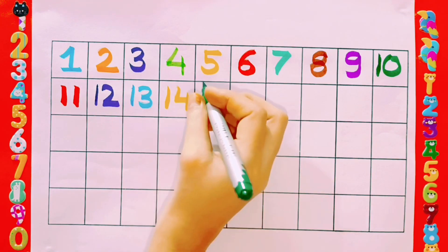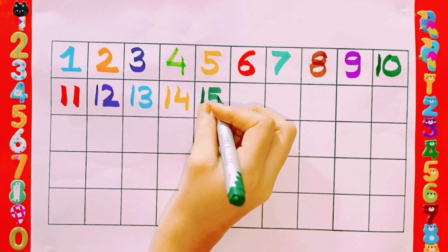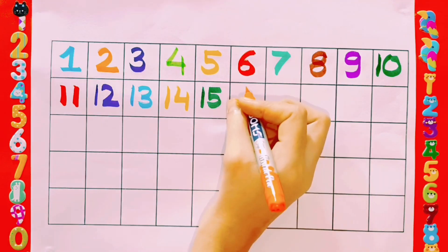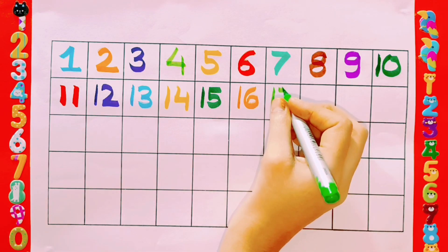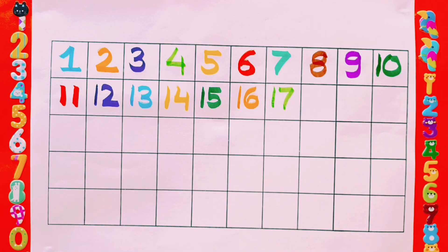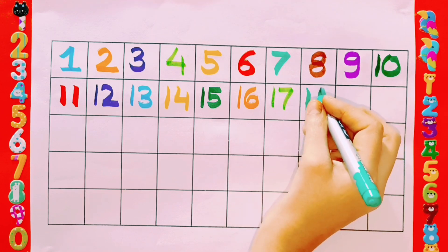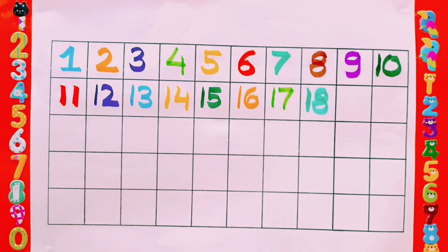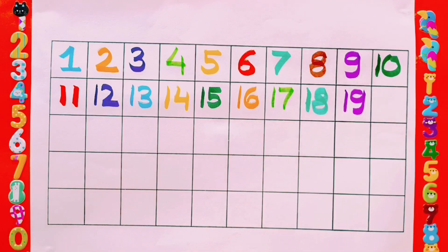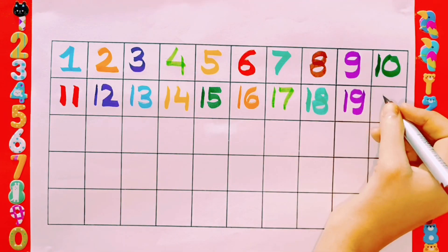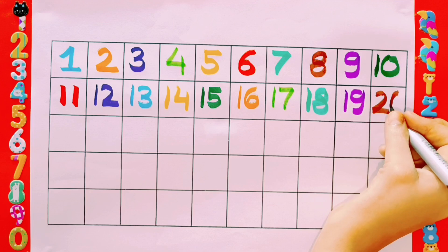15, 15, 15, 16, 16, 16, 17, 17, 17, 18, 18, 18, 19, 19, 19, 20, 20, 20.